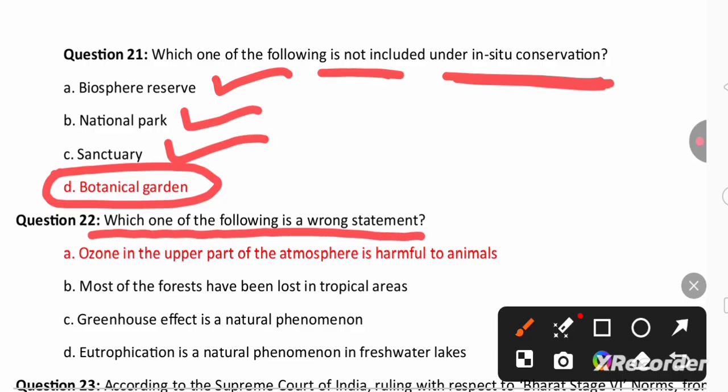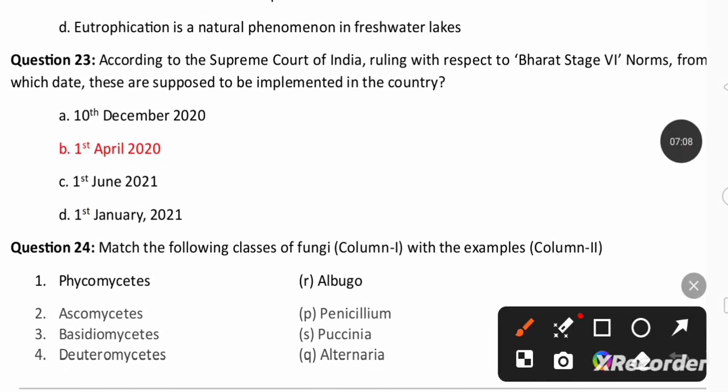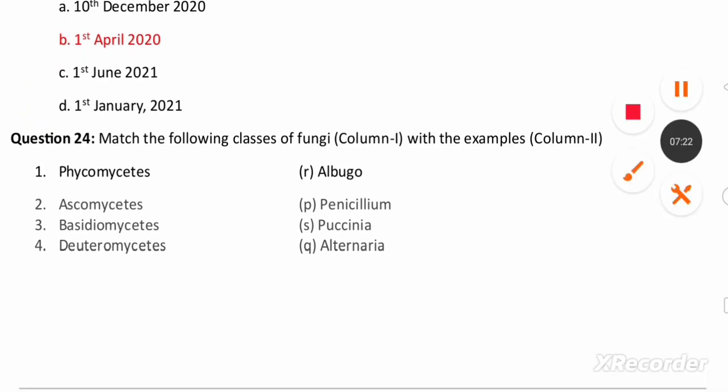Next question is which one of the following is a wrong statement. You can find here: ozone in the upper part of the atmosphere is harmful to the animals. No, ozone in the upper part of the atmosphere protects from UV rays. So that is a wrong statement. In the next question: according to Supreme Court of India ruling with respect to Bharat Stage 6 norm, from which date are these supposed to be implemented in the country? Bharat Stage 6 has been implemented on 1st April 2020.